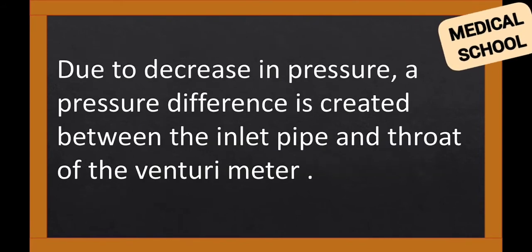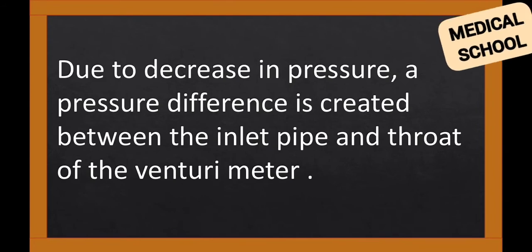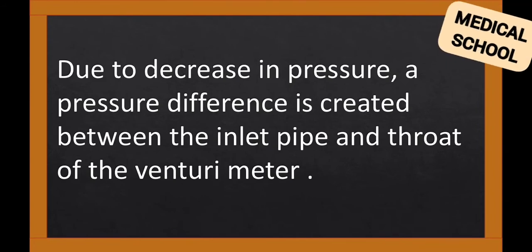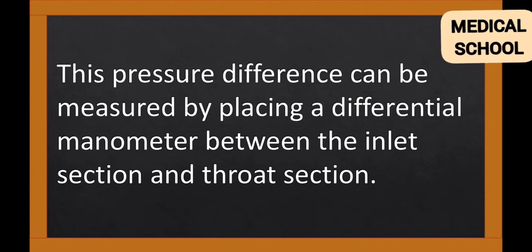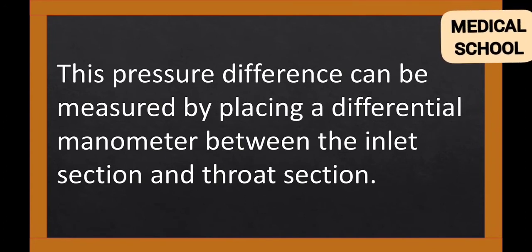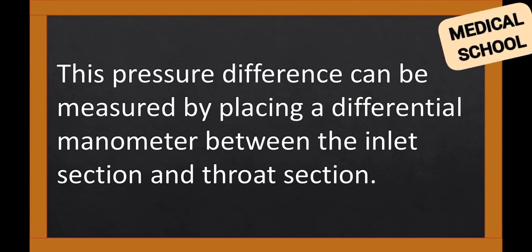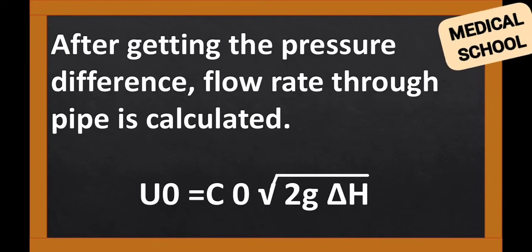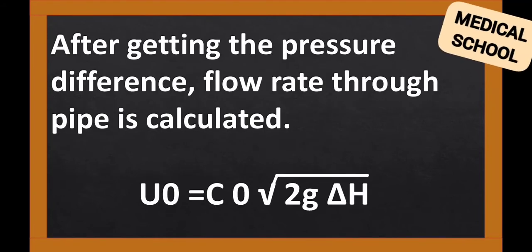Due to the decrease in pressure, a pressure difference is created between the inlet pipe and the throat of the Venturi Meter. This pressure difference can be measured by placing a differential manometer between the inlet section and throat section. After getting the pressure difference, the flow rate through the pipe is calculated.